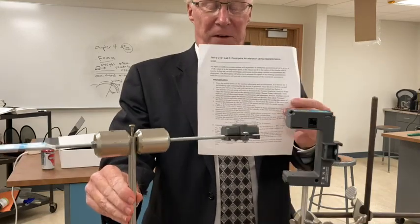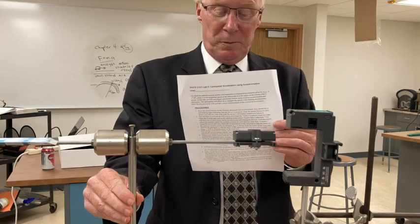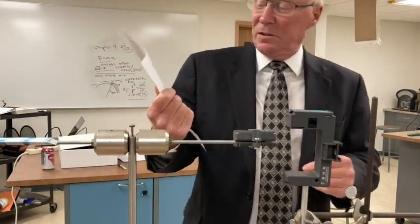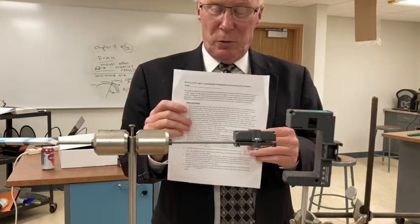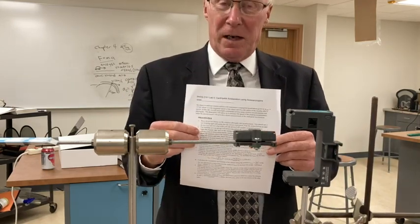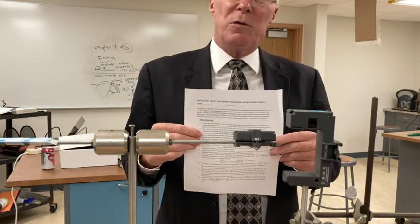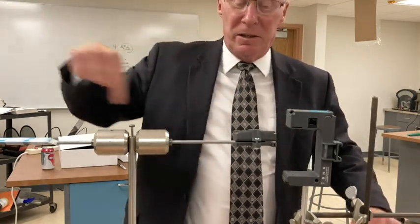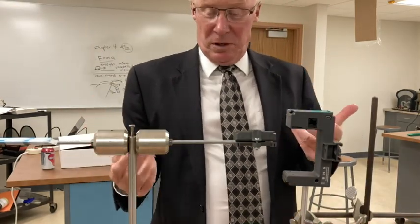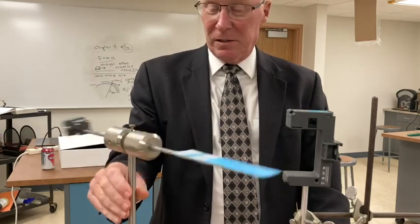This will be explaining lab 5 on centripetal acceleration, which we normally do in the classroom. And this is the handout that goes with it. This is related to chapter 5 on centripetal acceleration, V squared over R. If something is moving at a constant speed in a circle, it undergoes centripetal acceleration based on how fast it's moving.